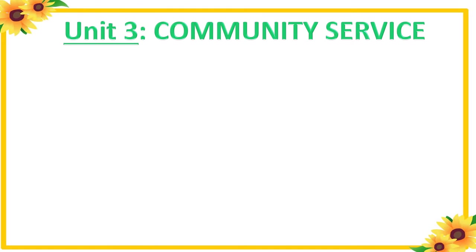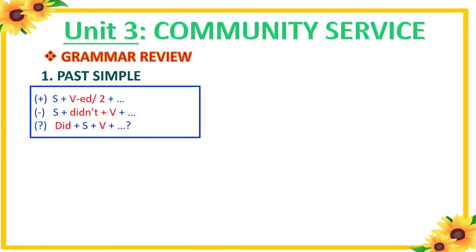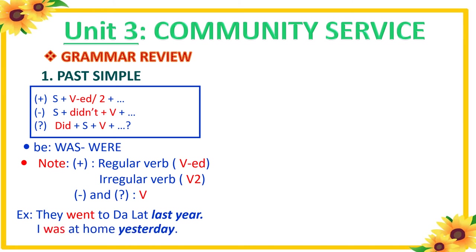Now let's go on to Unit 3: Community Service — Grammar Review. In this unit you will review two tenses. The first is the Past Simple tense. This is the form with ordinary verbs: affirmative — subject + verb + ed or irregular verb form 2; negative — subject + didn't + verb; question — did + subject + verb. The verbs to be of this tense are 'was' and 'were.' Remember: in affirmative sentences, we use regular verbs (verb + ed) or irregular verbs (form 2), but in negatives and questions, we use the verb infinitive. Examples: they went to Dallas last year; I was at home yesterday.